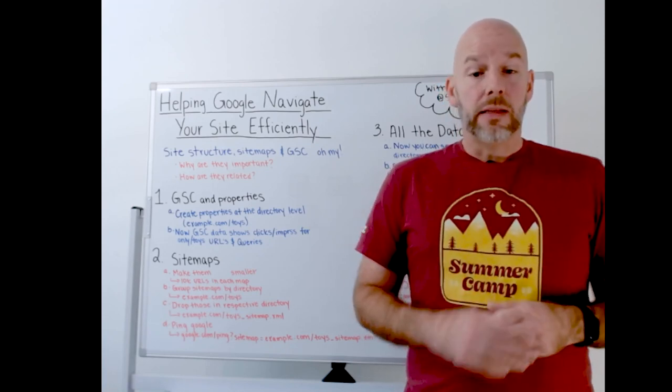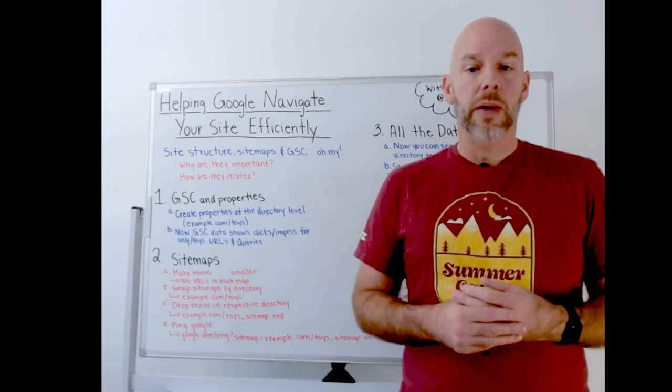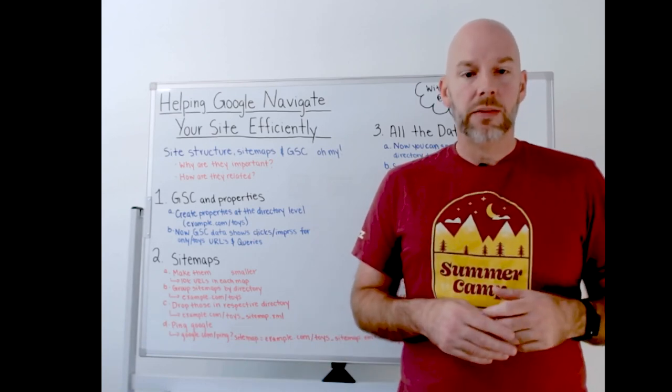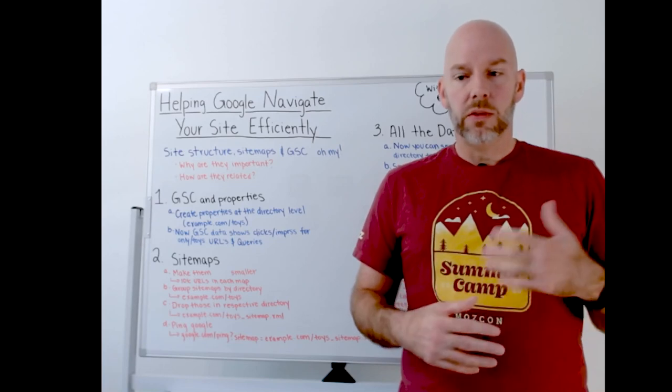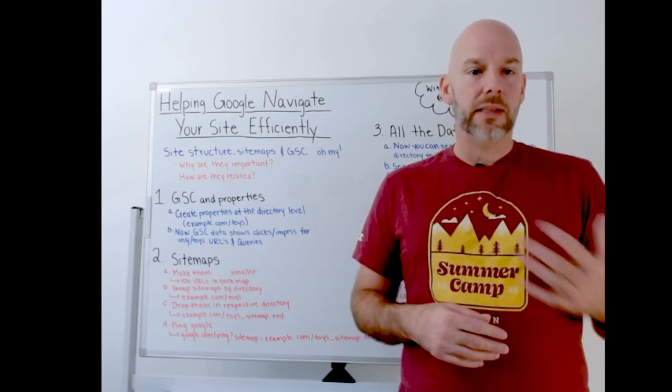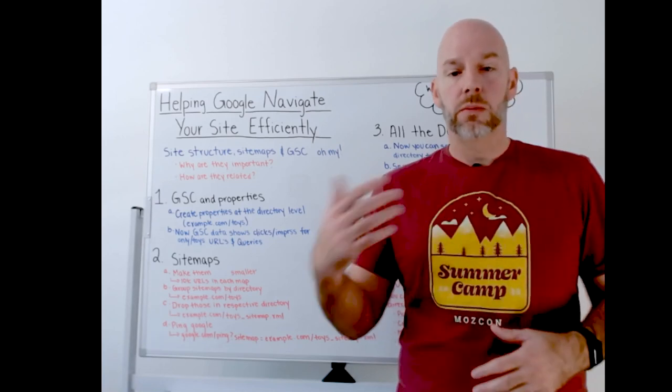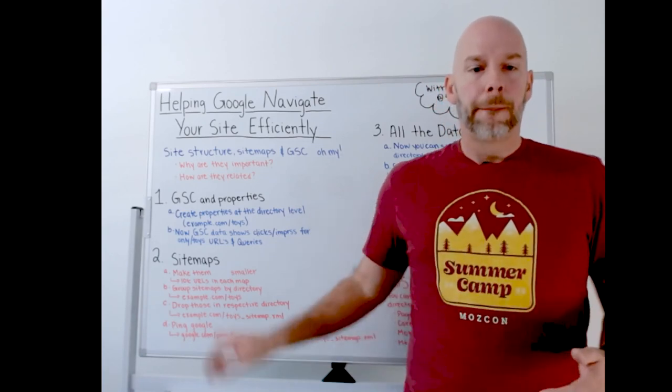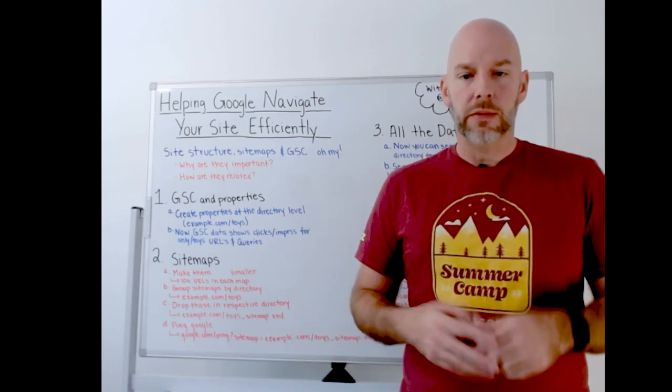And always, I think, a good practice is make sure you ping your sitemaps. Google has an API, so you can definitely automate that process, but it's super helpful every time there's any kind of a change to your content - add sites, add URLs, remove URLs, things like that. You just want to ping Google, let them know that you have a change to your sitemap.